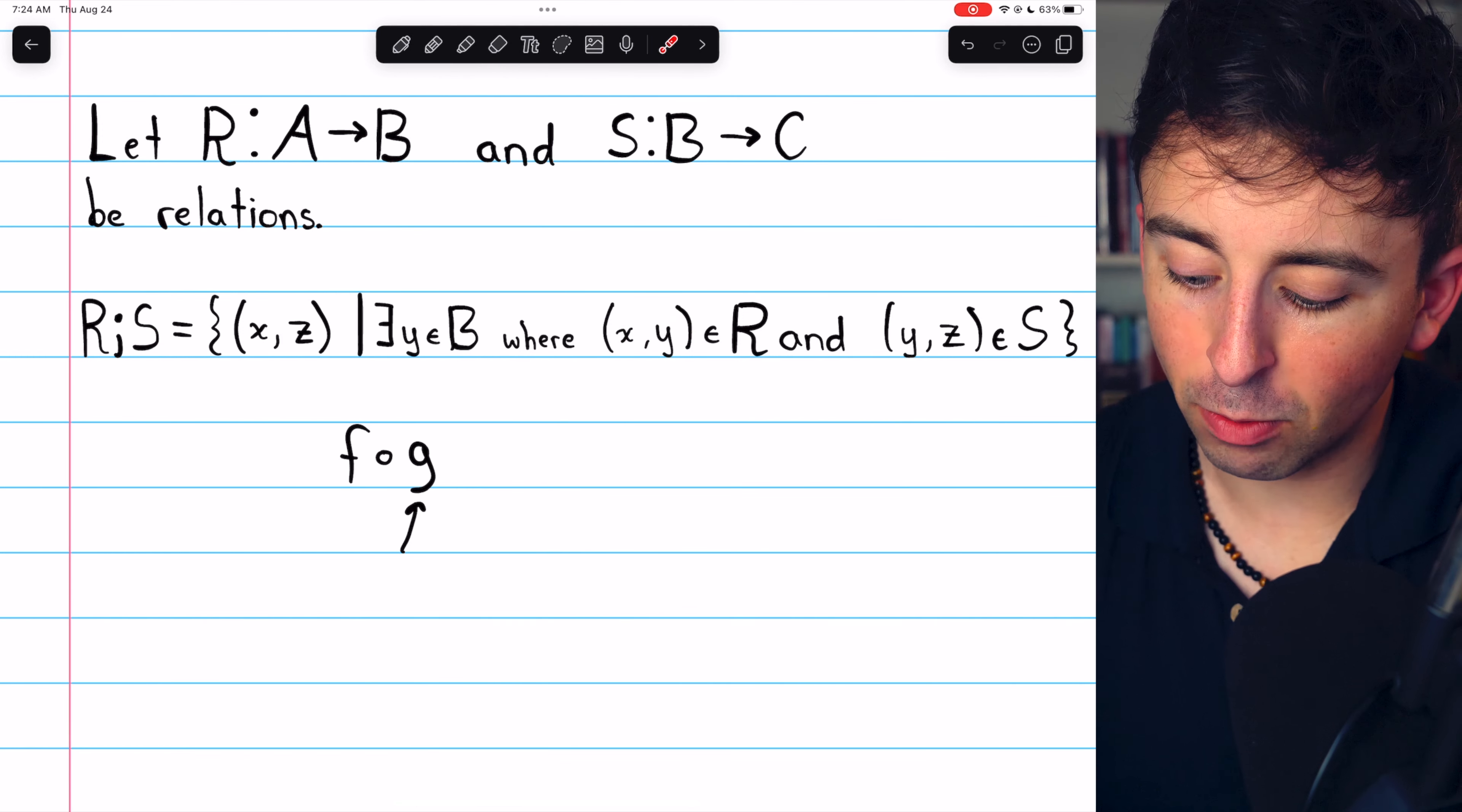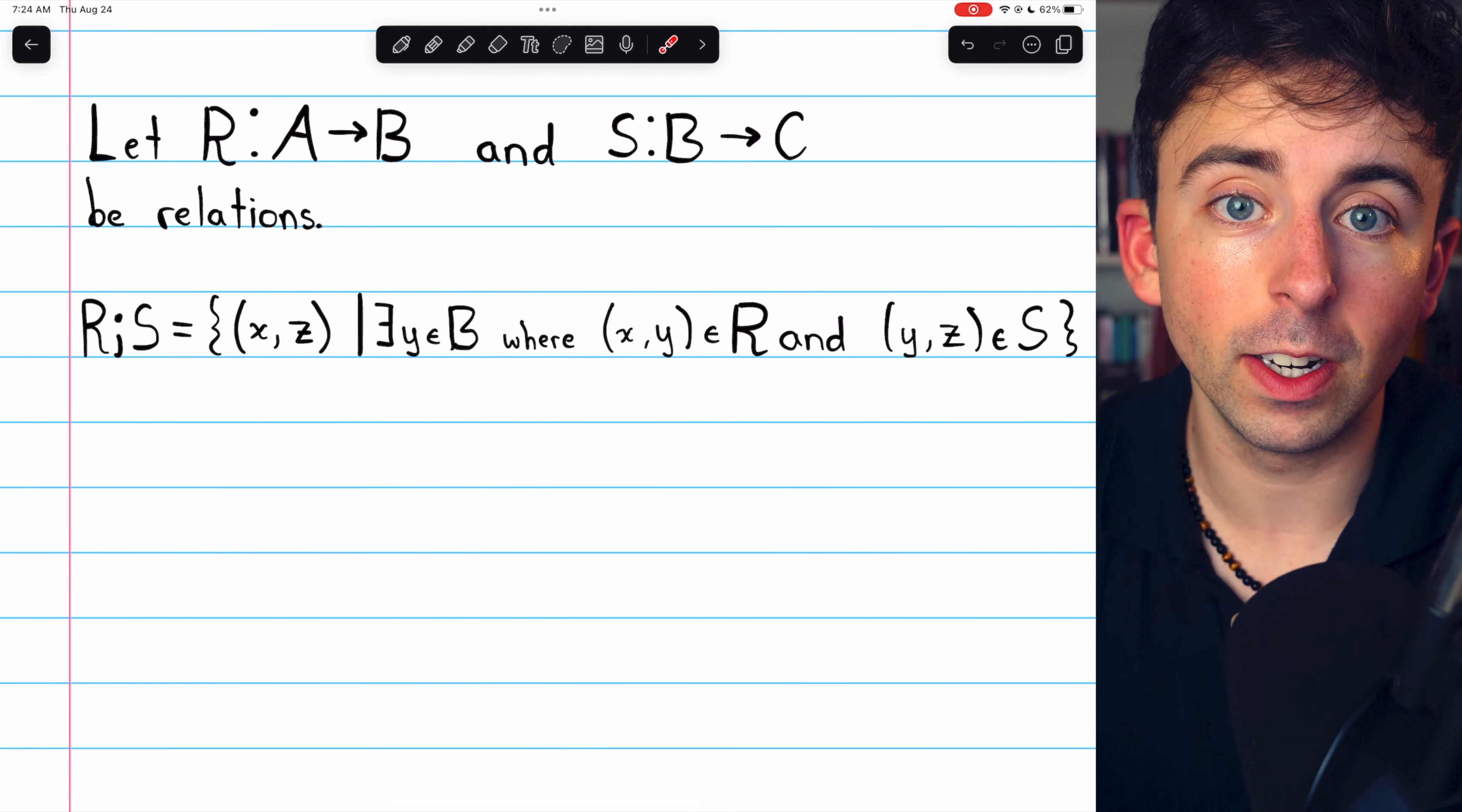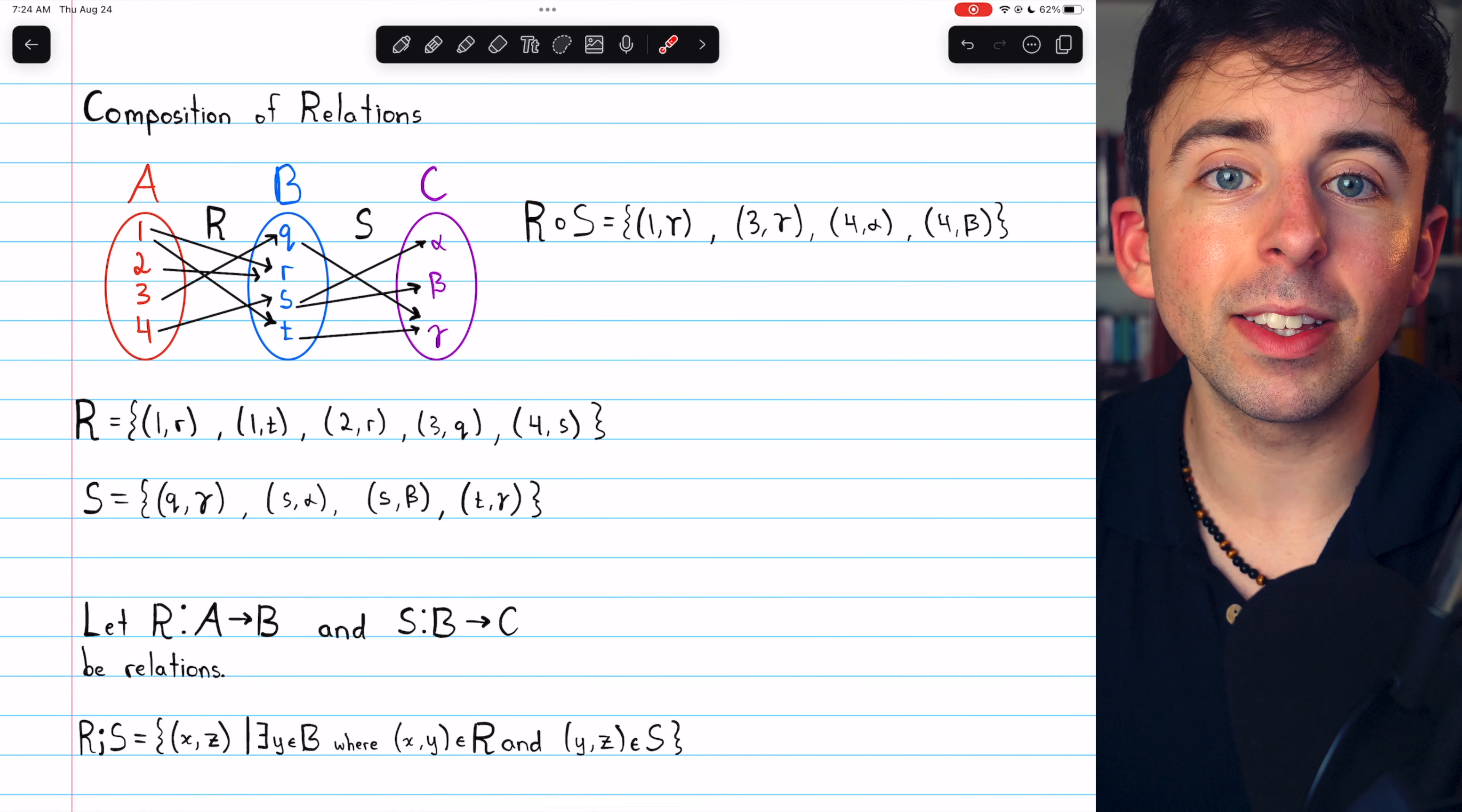Just be wary, you might also see a composition of relations following the typical order for function composition, which is right to left. And that's a quick overview of what a composition of relations is. Let me know in the comments if you have any questions. And thank you very much for watching.